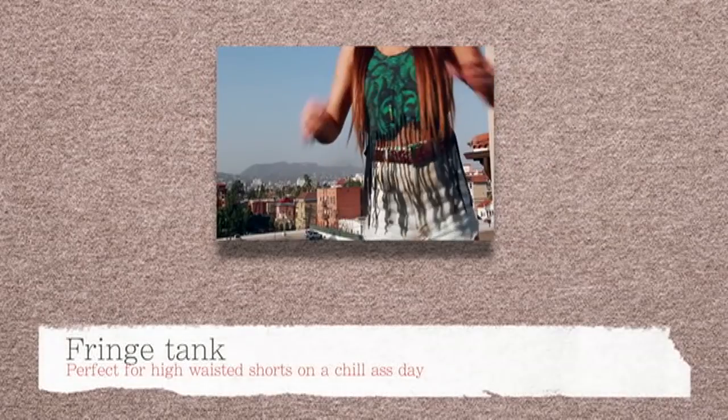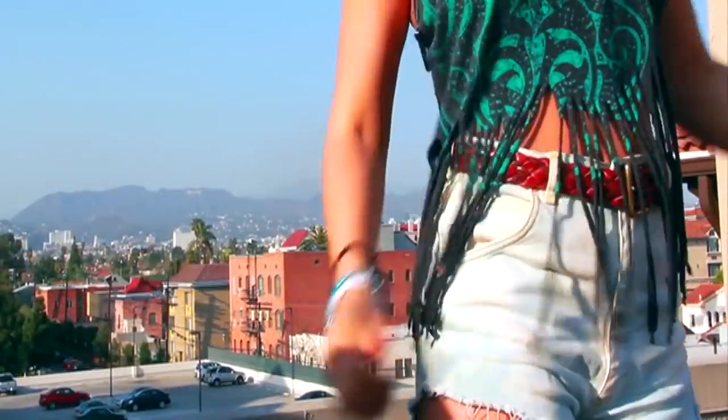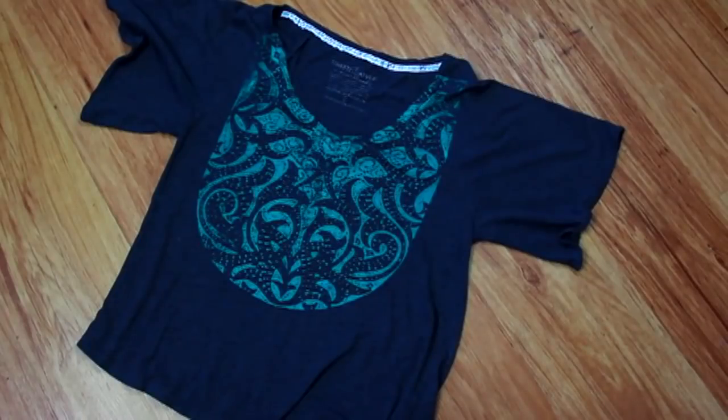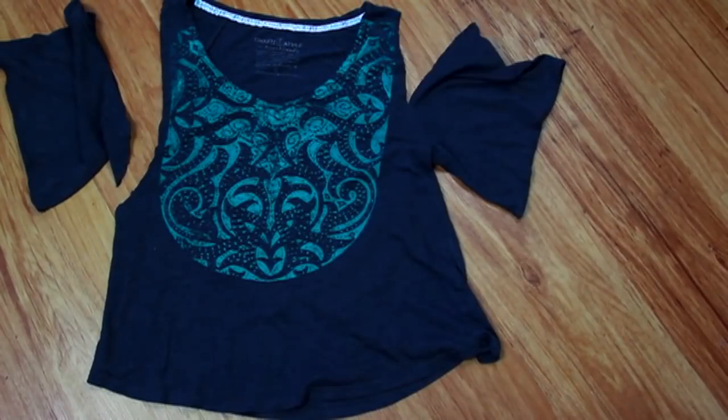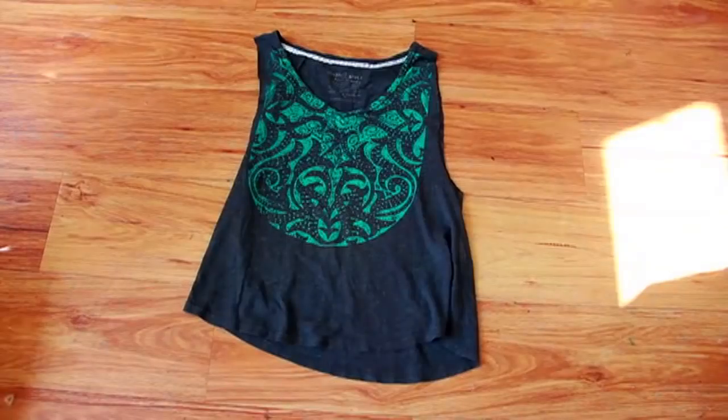The next one is my favorite—it's the fringe tank. I love it! Fringe is perfect for the summer, it's just really fun and it looks really cute. You can even wear it over your bathing suit if you want to. Since I'm in California, I'm going to take my sleeves off, but you can leave yours on.